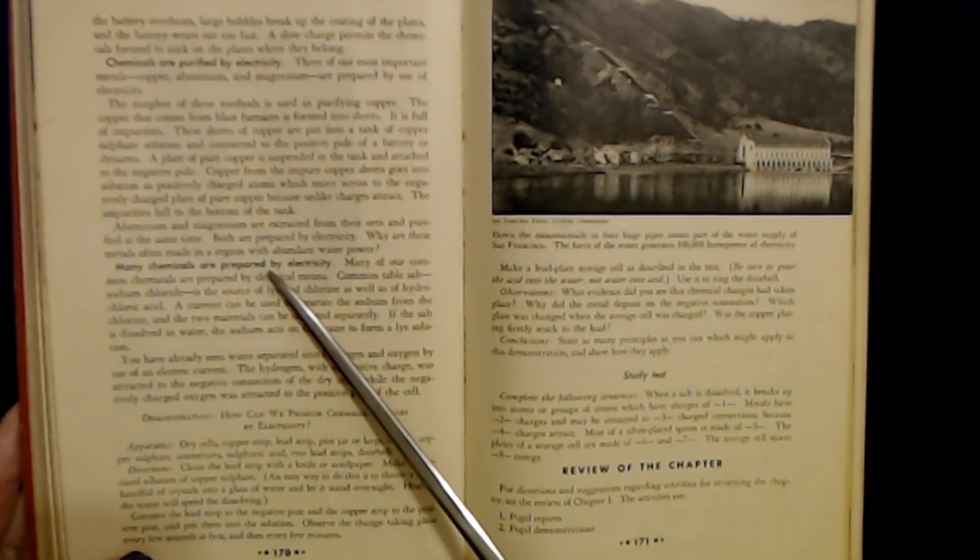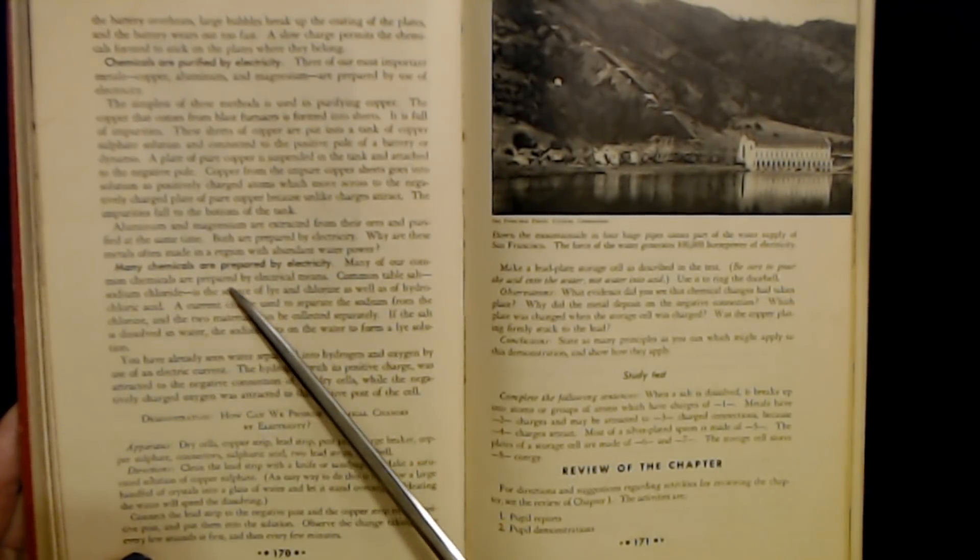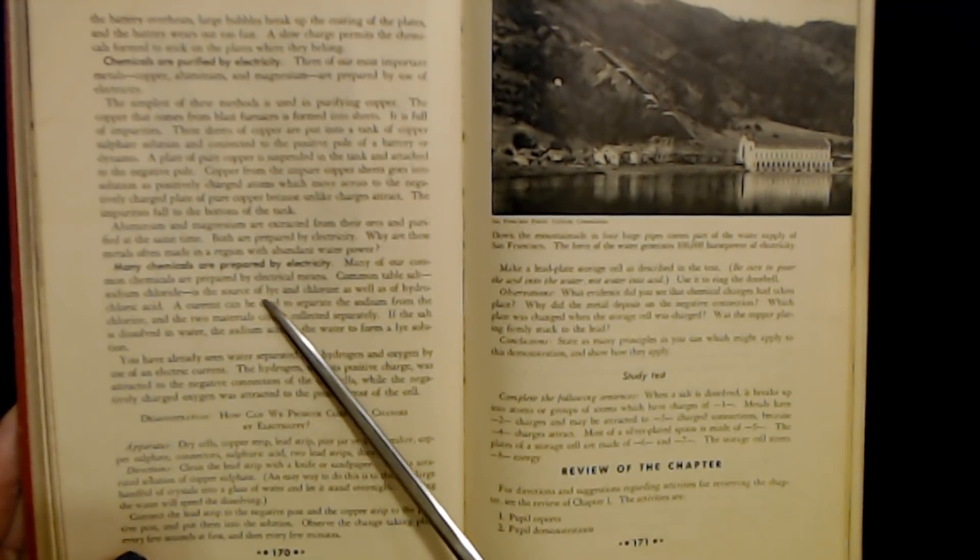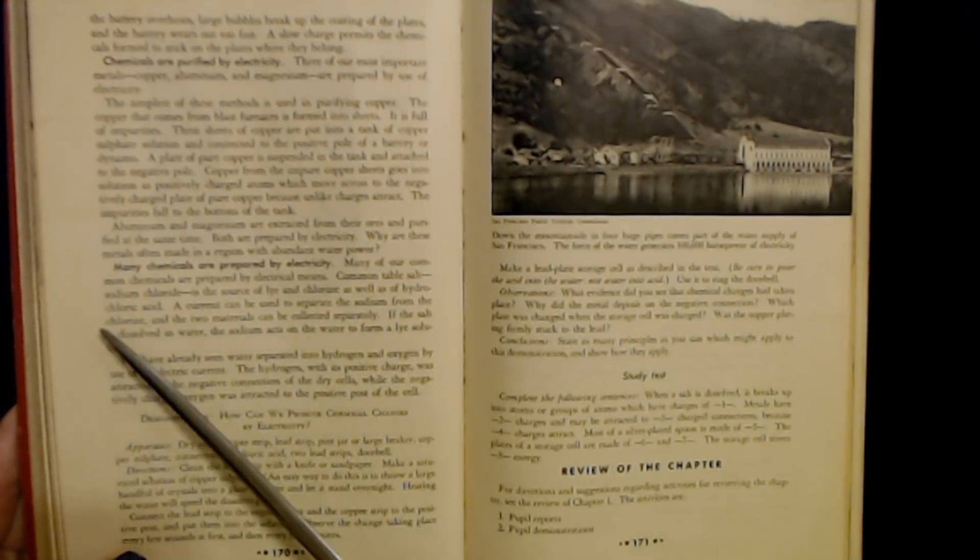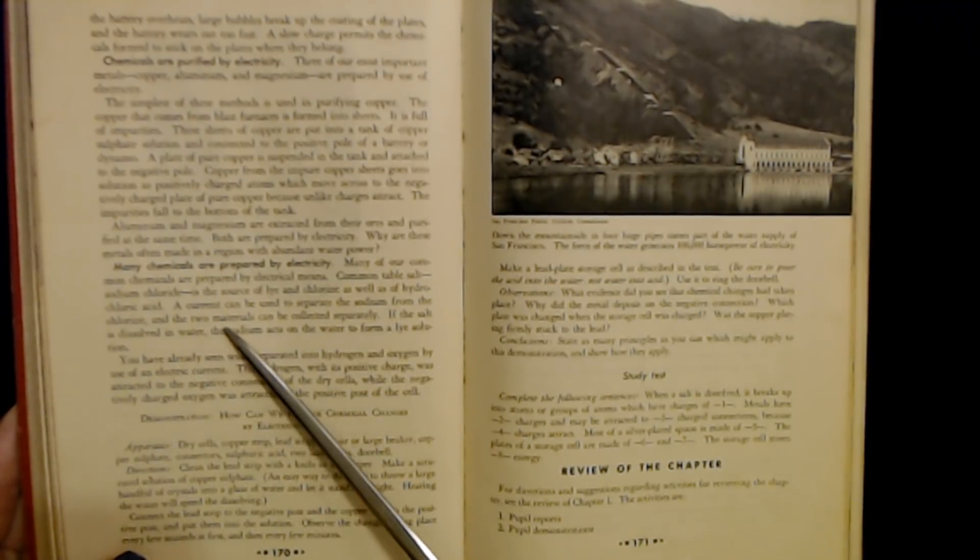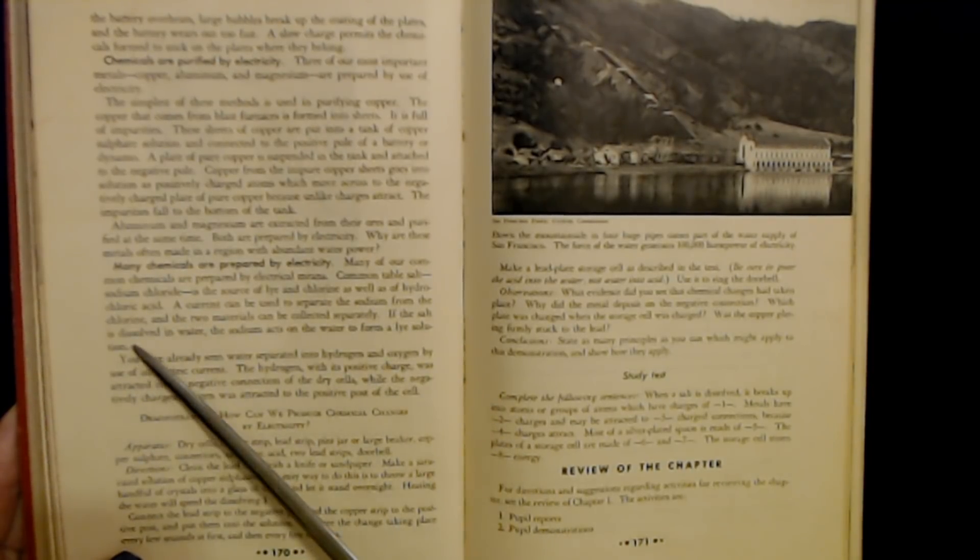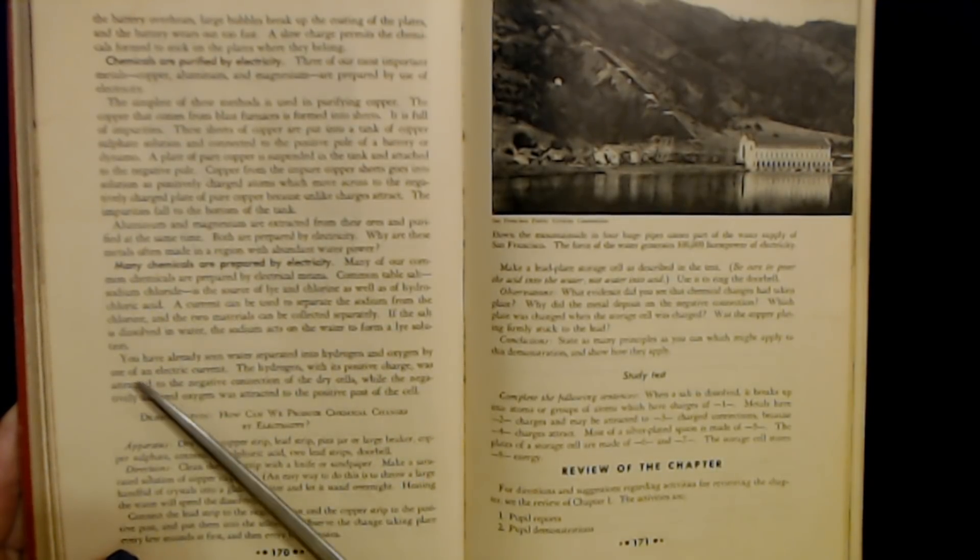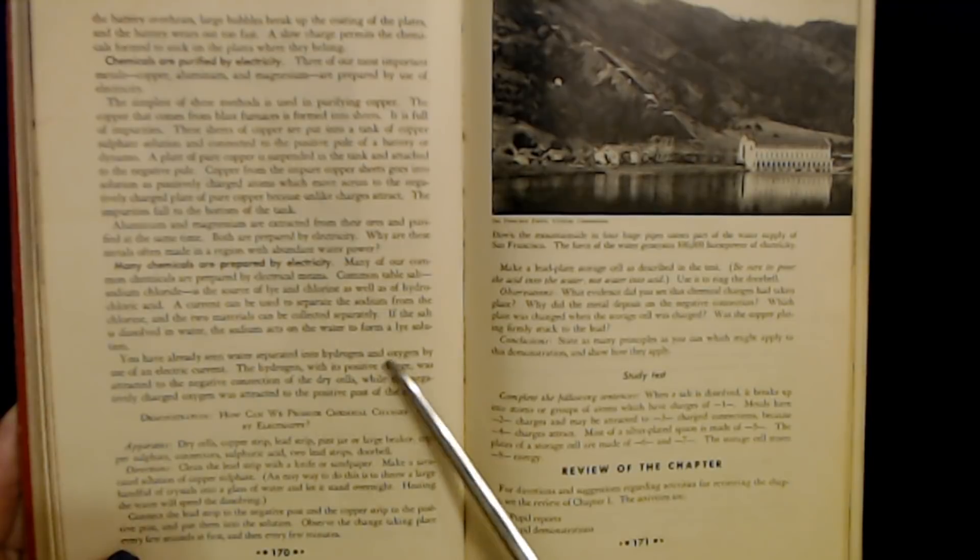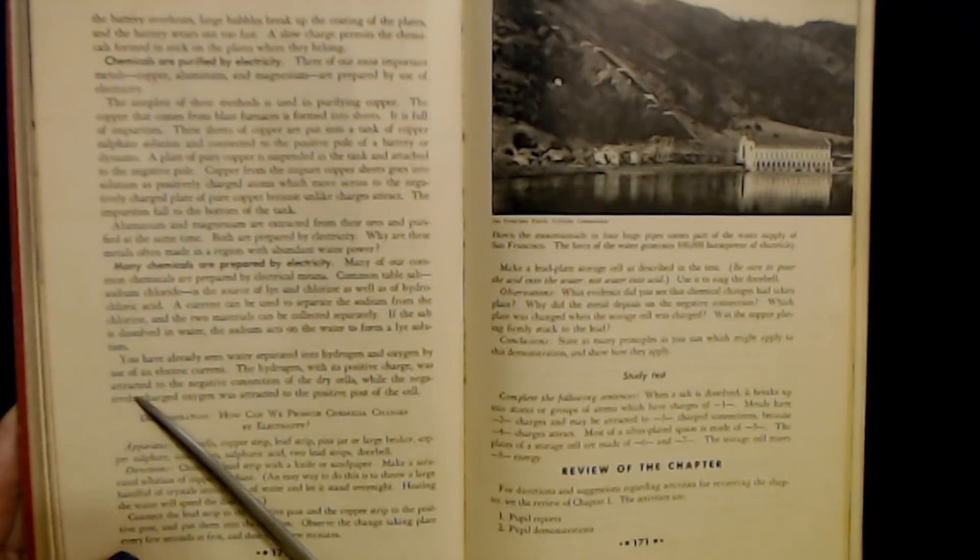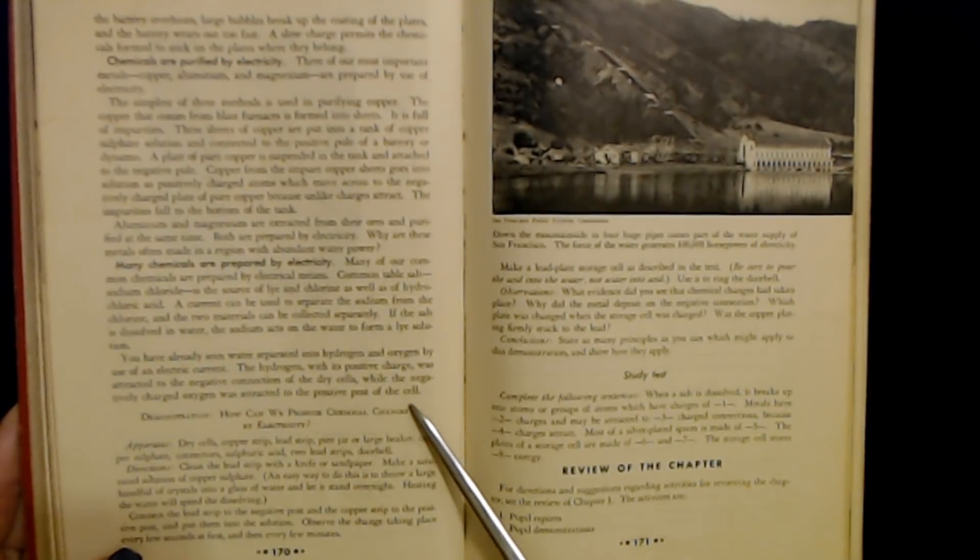Many chemicals are prepared by electricity. Many of our common chemicals are prepared by electrical means. Common table salt, sodium chloride, is the source of lye and chlorine as well as of hydrochloric acid. A current can be used to separate the sodium from the chlorine and the two materials can be collected separately. If the salt is dissolved in water, the sodium acts on the water to form a lye solution. You have already seen water separated into hydrogen and oxygen by use of an electric current. The hydrogen with its positive charge was attracted to the negative connection of the dry cells while the negatively charged oxygen was attracted to the positive post of the cell.